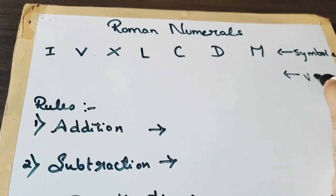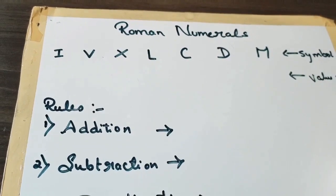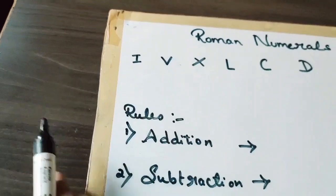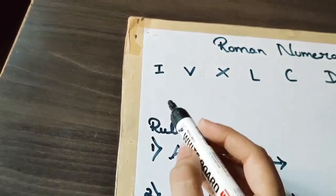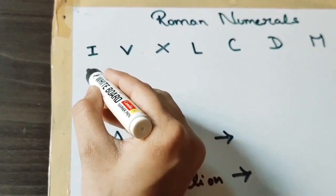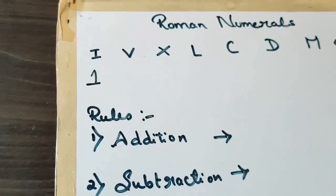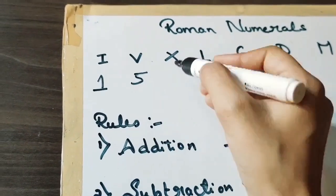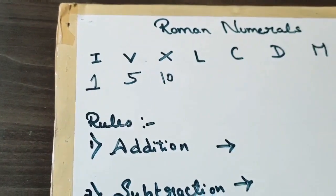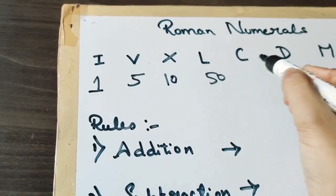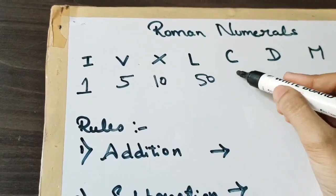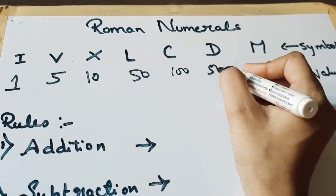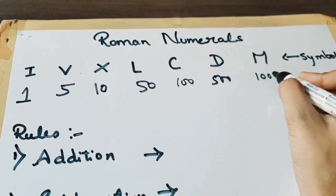Now I am going to write the values of these symbols. I represents 1, V represents 5, X represents 10, L represents 50, C value is 100, D represents 500, and M represents 1000.